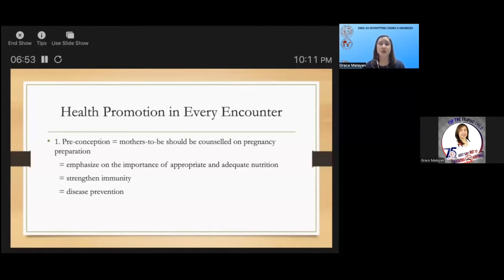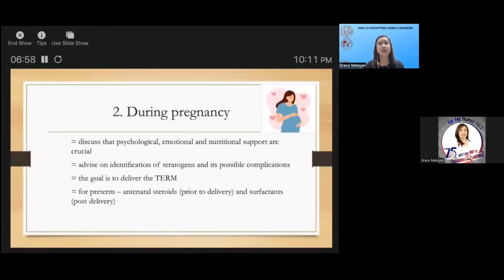Preconception mothers should be counseled on pregnancy preparation, emphasize appropriate and adequate nutrition and activities to strengthen immunity such as exercise, and disease prevention with necessary immunizations prior to conception. During pregnancy, psychological, emotional, and nutritional support are very crucial. We should involve the partner or the father, advise on the identification of teratogens and possible complications, and the goal is to deliver the baby to term. In the event the baby is delivered as a preterm, discuss the importance of antenatal steroids and surfactants.